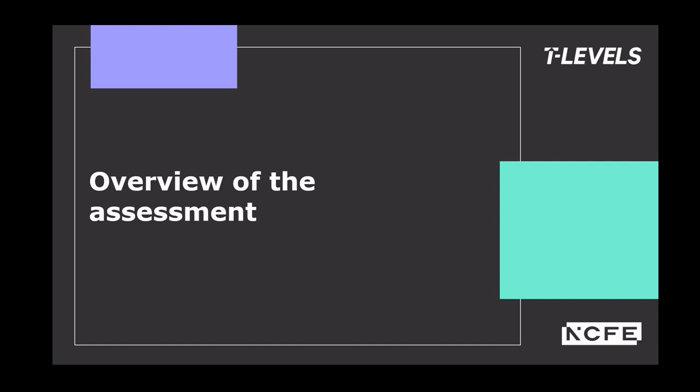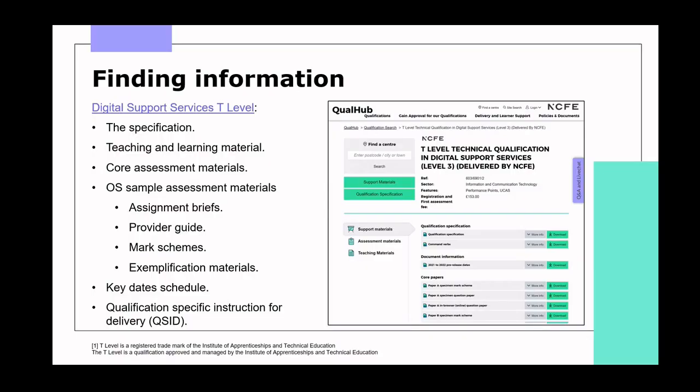We're going to look at an overview of the assessment now, including marking and grading information. As most of you are in year two of delivery, you'll be familiar with the QualHub page for the Digital Support Services T-Level. In the support tab, along with our sample occupational specialism assignments, we have exemplification materials which show a pass and distinction example of work for those sample assignments, and they contain comments by examiners highlighting positives and areas for development.